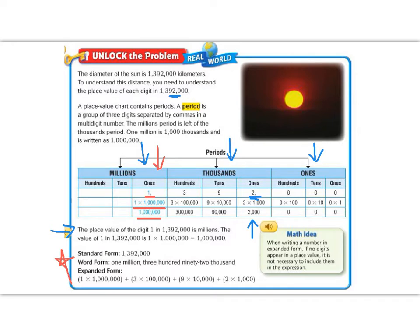Standard form is the normal way that we see numbers, like this. Word form is that same number but written out in words. So 1 million, 392,000, and we would have a comma here if the number continued on. And the last form is expanded form.